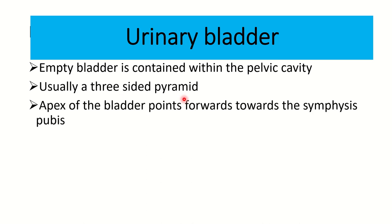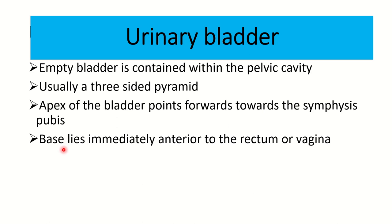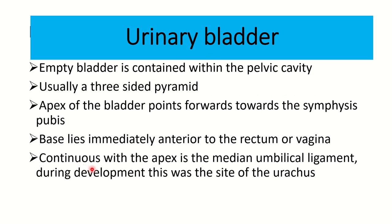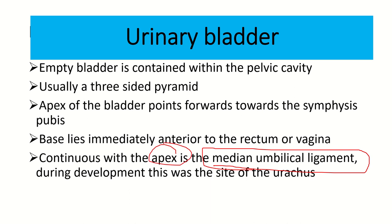The urinary bladder is a pyramid which is three-sided. The apex of the bladder points forward towards the symphysis pubis, so the apex is located anteriorly. The base lies immediately anterior to the rectum or vagina. The apex is connected to a fibrous structure known as the median umbilical ligament. During development, this was the site of the urachus. It is very important that the median umbilical ligament attaches to the apex.